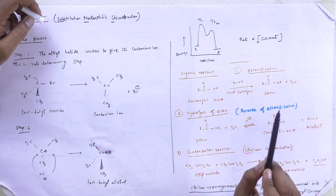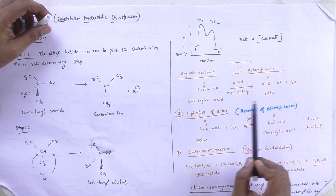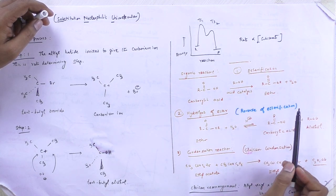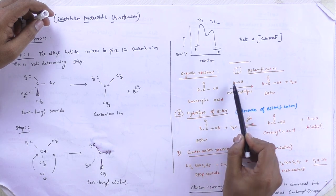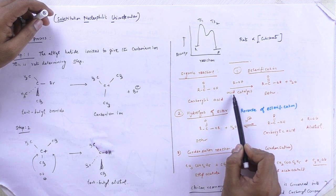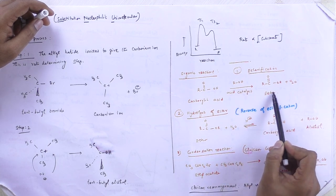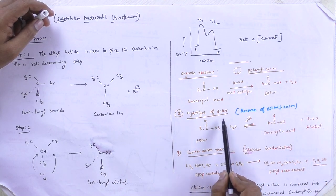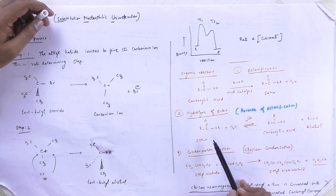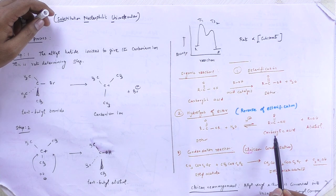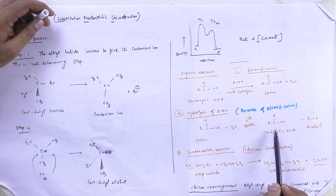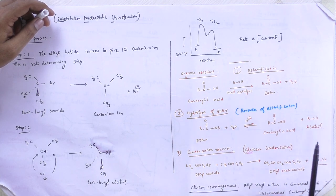First, we are going to see about esterification — the formation of an ester from a carboxylic acid and an alcohol with an acid catalyst. The carboxylic acid reacts with alcohol in the presence of an acid catalyst, and the final product is an ester. Next is hydrolysis of ester, which is exactly the reverse of esterification — the ester is transformed back into carboxylic acid.